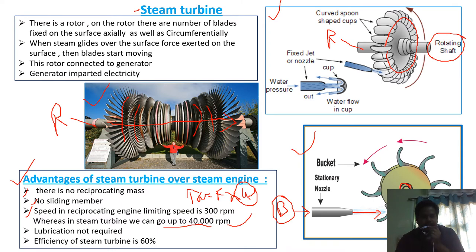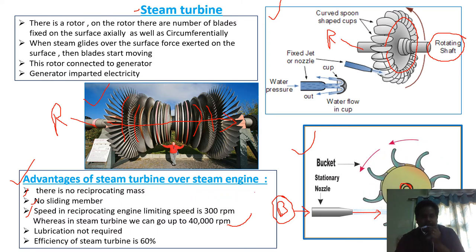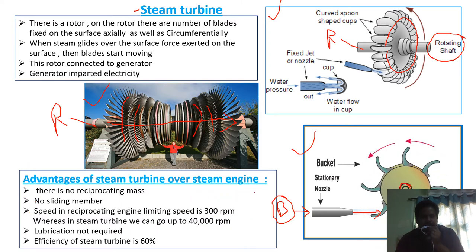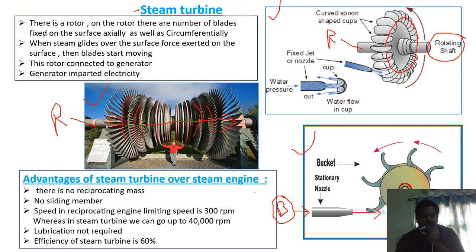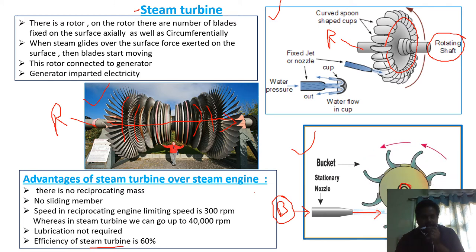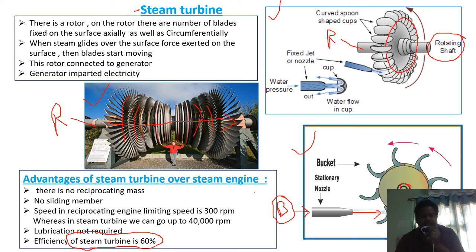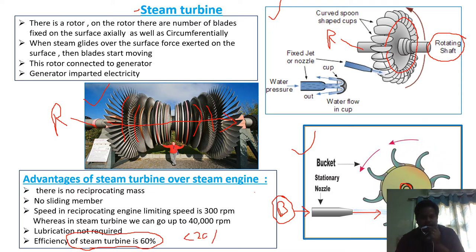The steam turbine does not require much lubrication because it does not have a piston-cylinder arrangement. Lubrication is required, but when compared to the steam engine it is very less. Most importantly, in the steam turbine the efficiency is 60%, whereas in the steam engine it is less than 20% — almost 40% higher efficiency.